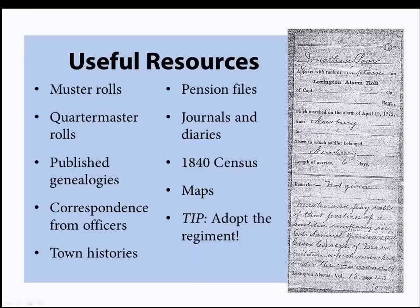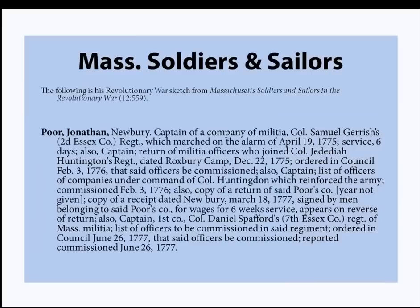Perhaps you'll find a pension file or bounty land for your ancestor. Pension files for the average soldier were not granted until the Act of 1818 unless you were an officer, so hopefully your ancestor lived long enough or his widow applied. Journals and diaries are wonderful — while you adopt the regiment, seek them out not just for your ancestor but for those he served with. The 1840 census is another resource, as are maps. And the most important tip: adopt that regiment.